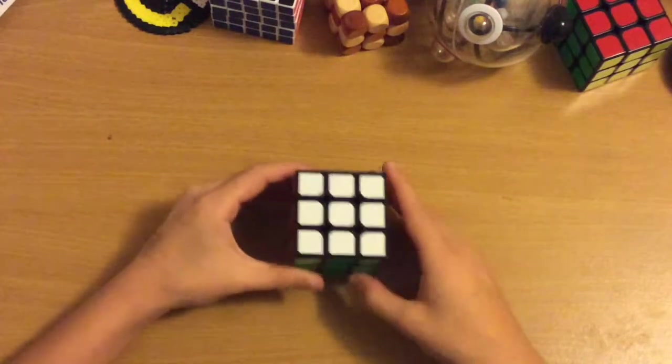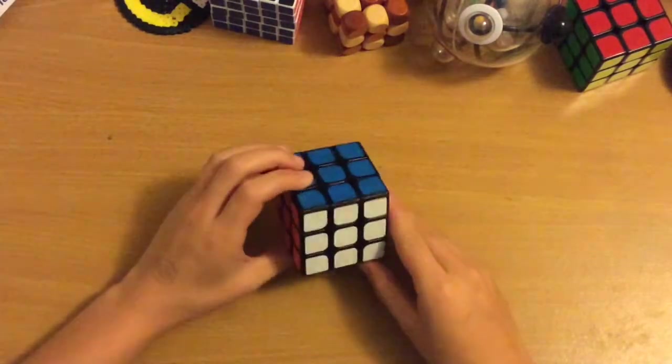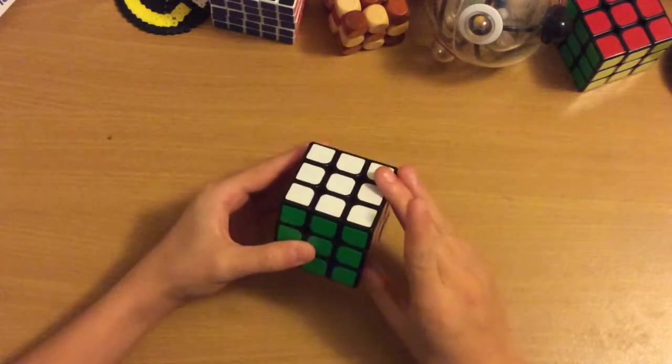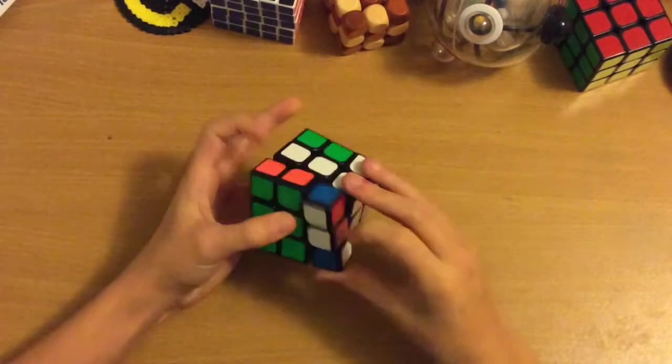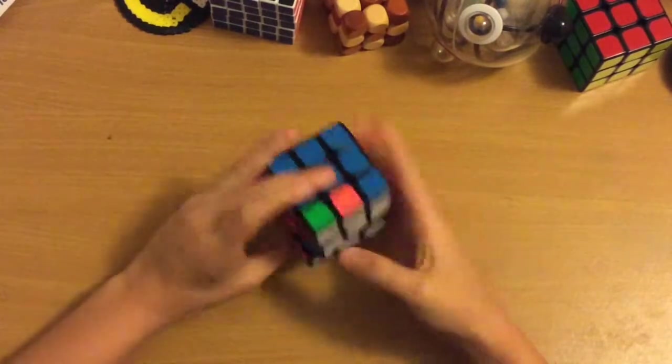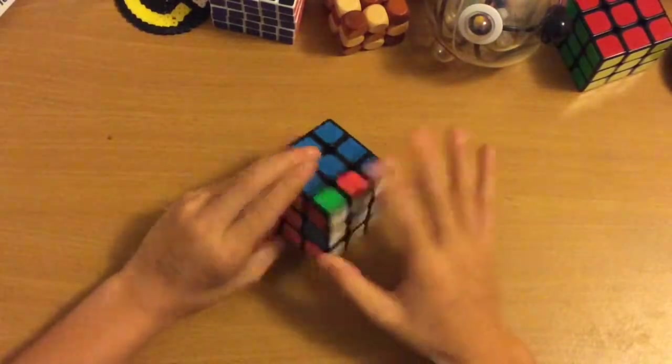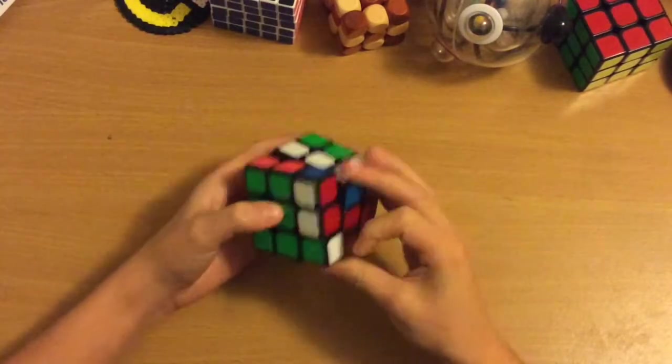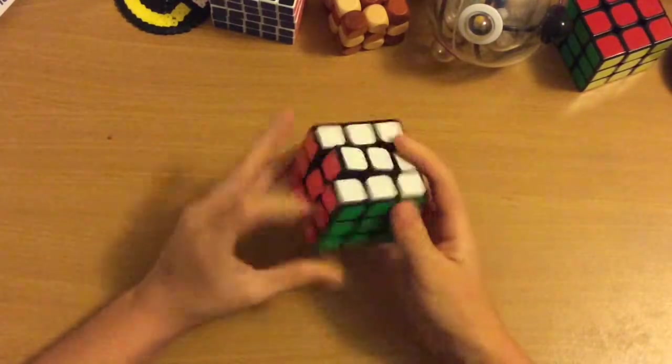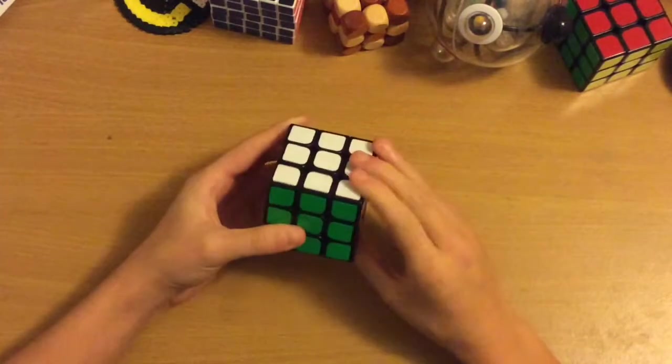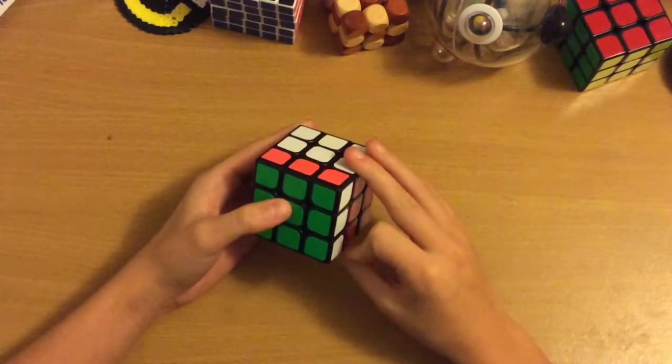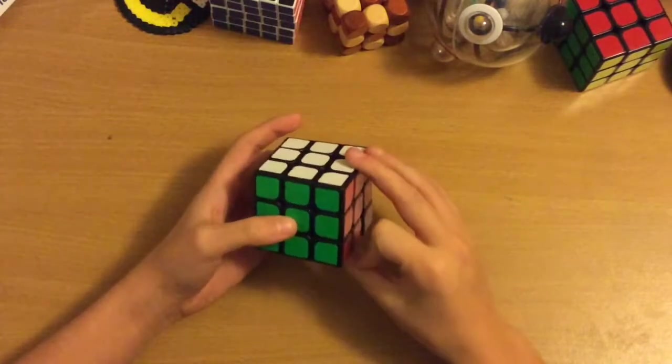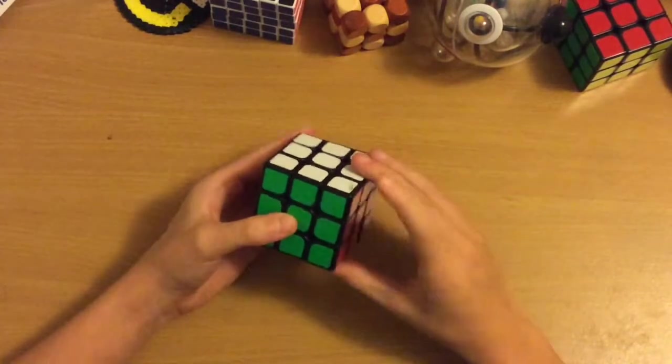So this part I teach you how to solve the corners blindfolded. With the corners, there's this algorithm which you guys probably already know, it's the Y perm on a 3x3. So it's this algorithm on a 3x3, except that when you execute it in blind solving, you don't do the F move at the start and the F prime move at the end of it. So it looks like this.